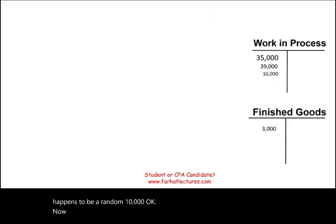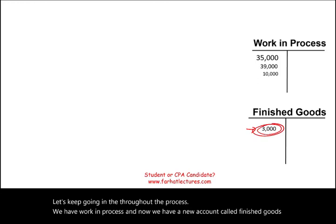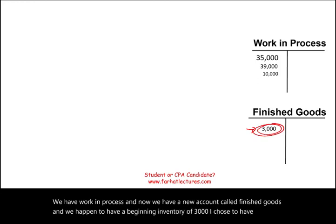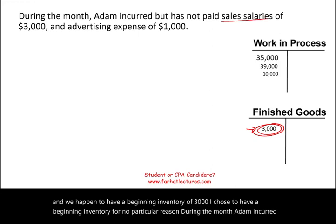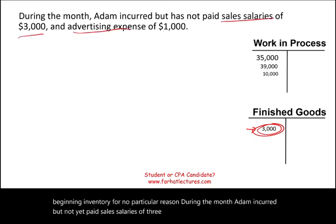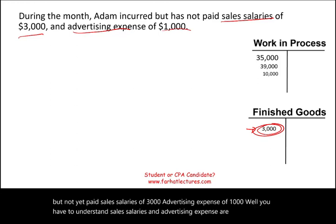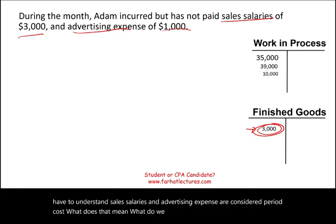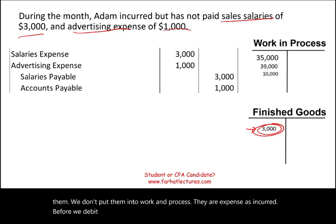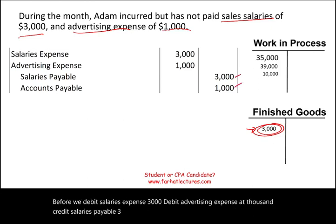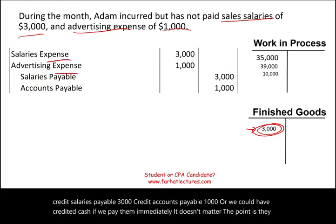Now we have work in process and a new account called finished goods, with a beginning inventory of $3,000. During the month, Adam incurred but not yet paid sales salaries of $3,000 and advertising expense of $1,000. Sales salaries and advertising are period costs — they are expensed as incurred, not added to work in process. We debit salaries expense $3,000 and advertising expense $1,000, and credit salaries payable $3,000 and accounts payable $1,000.